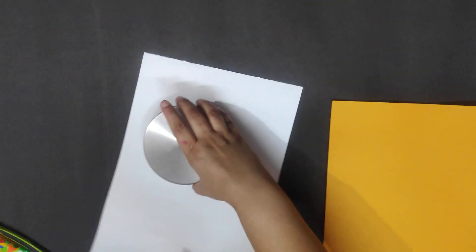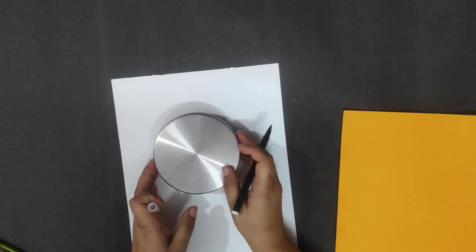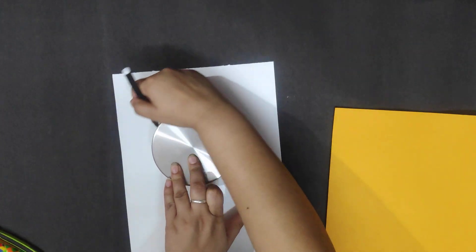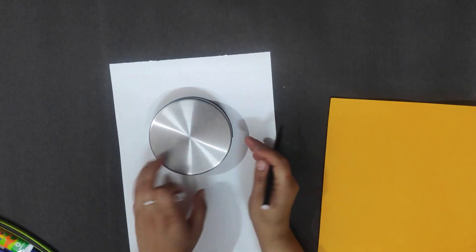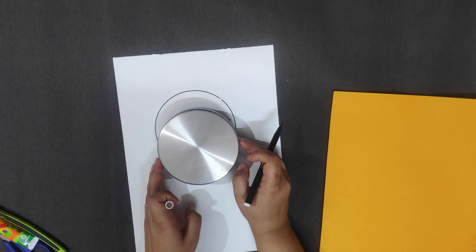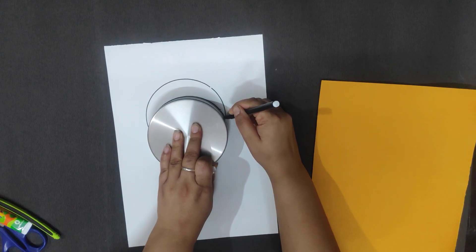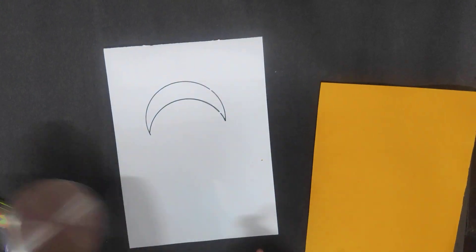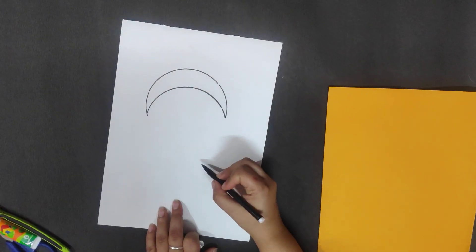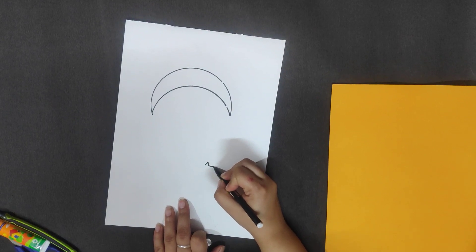First take a white sheet and we will draw a moon in it. First draw a half circle, now put it here and draw again. Now your moon is ready.